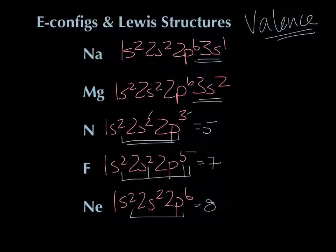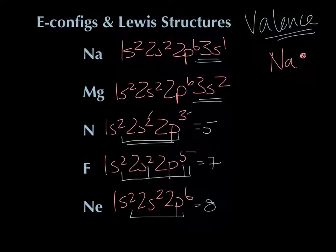To draw Lewis structures, we start by writing the symbol of the element — just Na for sodium — and then we draw dots to represent the valence electrons. Sodium has one s electron, so I draw a single dot for it. That single dot is the valence electron we're representing. We don't care about the 1s², 2s², 2p⁶ because those are not going to be involved in bonding.